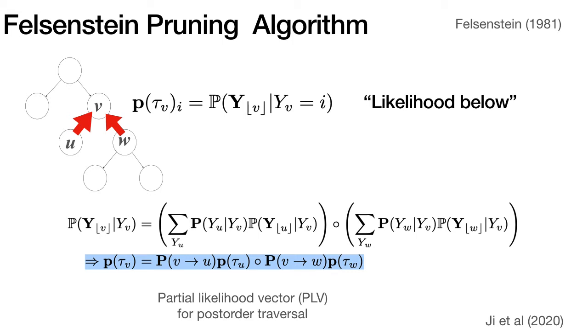So recall that Felsenstein pruning algorithm is a dynamic programming algorithm that computes likelihood by marginalizing out the unobserved sequences at the internal nodes for a given tree. And it does this by associating likelihood table with each node of the tree and filling out this table in a bottom-up fashion from leaf to root. And the result of these computations, sometimes referred to as messages, get propagated up to the root using transition matrix, denoted in boldface capital P, which allows us to compute the likelihood over all observed sequences for a given tree with internal states marginalized.